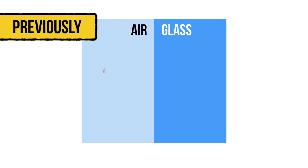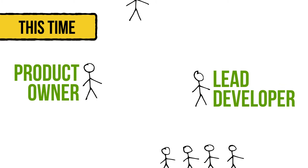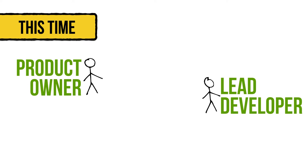Previously, light passed from air to glass. Some was reflected — not all of the light made it through. An electrical signal passed from one electronic component to another. Some was reflected — not all of the signal made it through. This time, a signal will pass from product owner to lead developer. How much will be reflected, and how much will make it through?